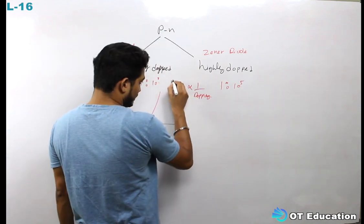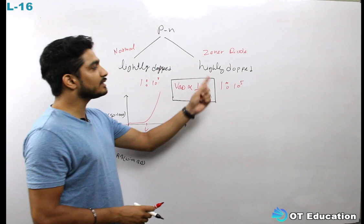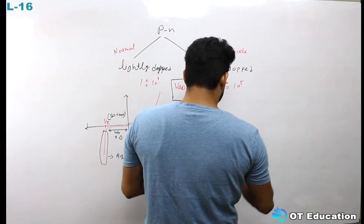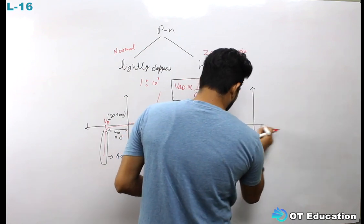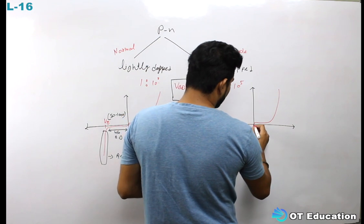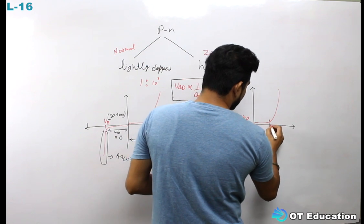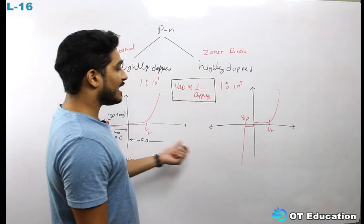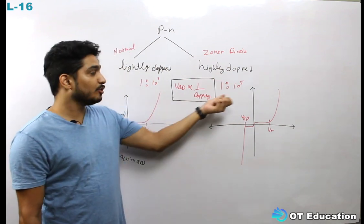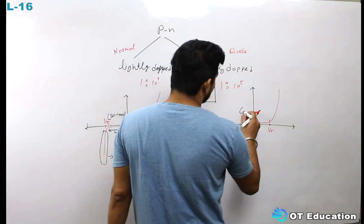Like the doping concept — more doping means the breakdown voltage will be reduced. If we talk about the Zener diode, then the Zener diode is highly doped, which means the reverse breakdown voltage will be reduced. The Zener diode's reverse breakdown voltage is reduced to 2 to 5 volts.